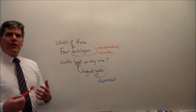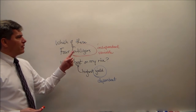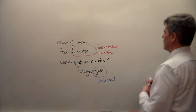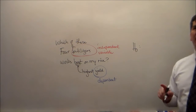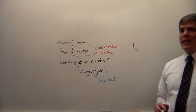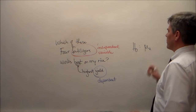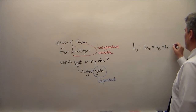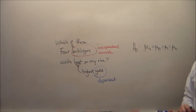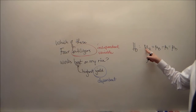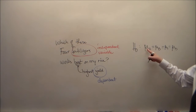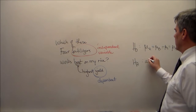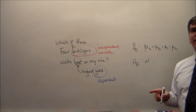This rice example is going to undergird all of this lecture. The null hypothesis — remember, null means none — is that there's no difference among these four fertilizers. The average yield for fertilizer A equals the average yield for B, equals C, equals D. We use mu, a Greek letter, indicating we're talking about the population. If that's the null hypothesis, then the alternative is its logical opposite: at least one of the averages is not the same as the others.